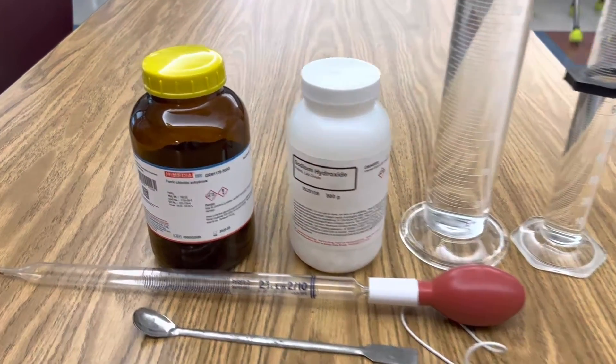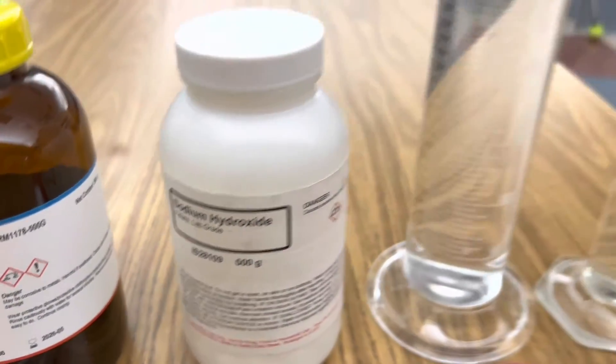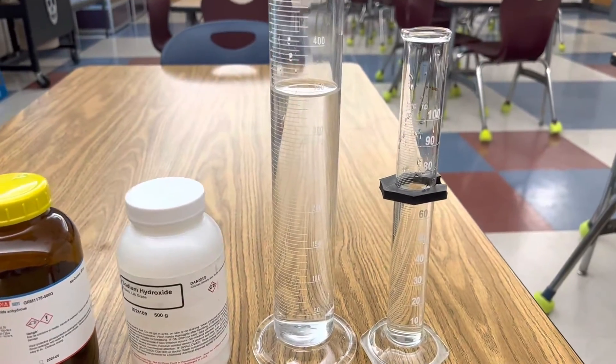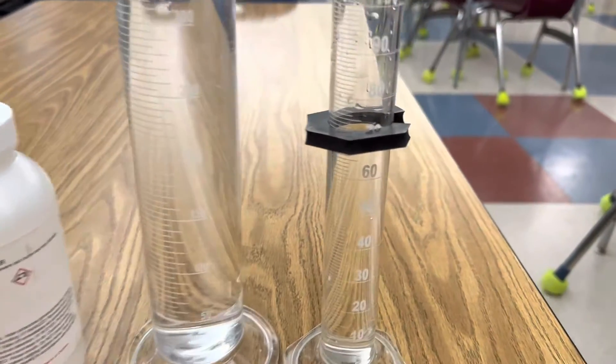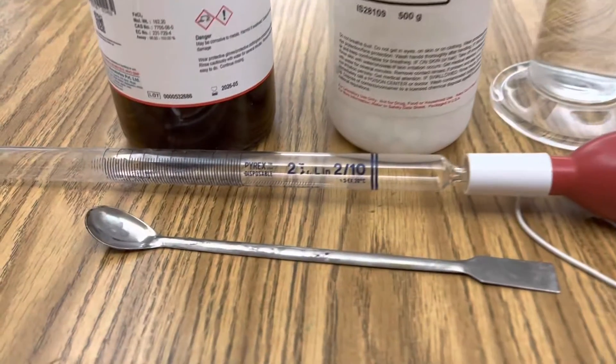All I'm using in this investigation is ferric chloride, sodium hydroxide, one graduated cylinder with 350 milliliters of distilled water, a second graduated cylinder with 70 milliliters of water, my dropper, and a spoon.